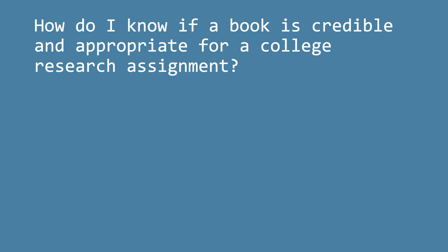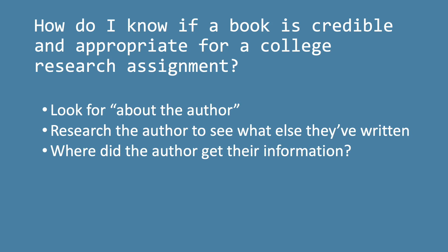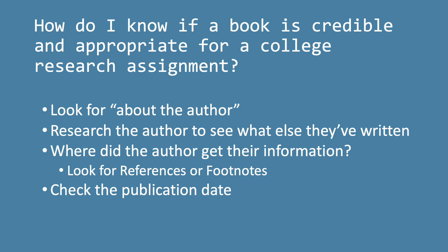Now that we know how to find books, another good skill is knowing whether a book is credible and appropriate to use on a college assignment. The first thing you can do is look for "about the author," typically at the end or beginning of a book — a short biography about who wrote it. You may also want to research the author by putting their name in Google to see what else they've written. Another thing you can look for is where the author got their information — sometimes you'll see a list of references at the back of the book or footnotes on the bottom of the page. You can check the publication date on the copyright page, or on the library record. And finally, what do you know about the publisher? Are they reputable? A lot of the academic books you're finding will come from university presses.